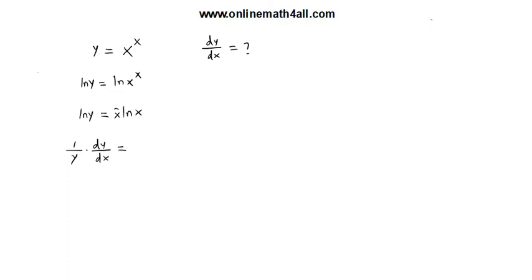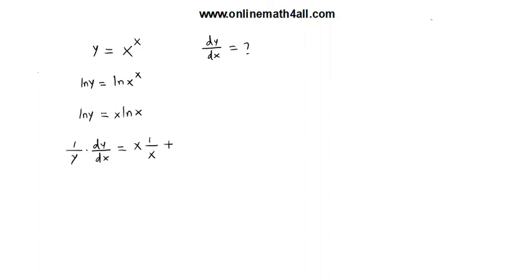Now we come to the right side, where the two variables are multiplied, so I am going to use the product rule. I keep the first variable x as it is and find the derivative of the second term ln x, which is 1 over x. Then I keep the second term ln x as it is and find the derivative of the first term x, which is 1 times ln x. So x and x cancel out. We get 1 over y times dy over dx is equal to 1 plus ln x.